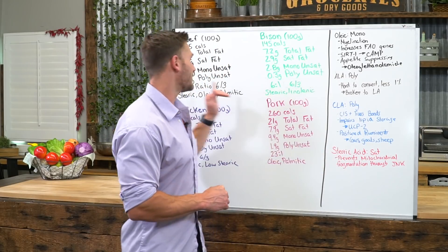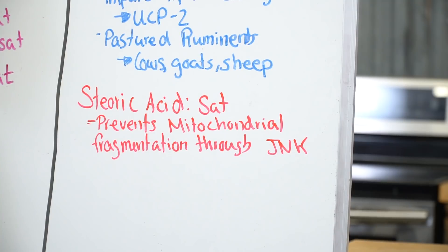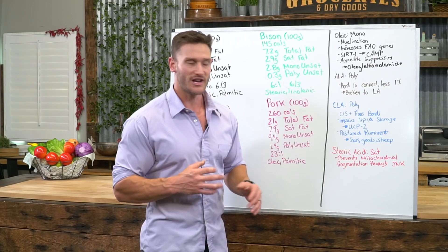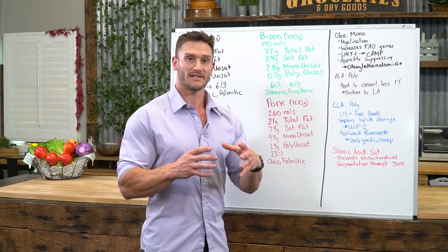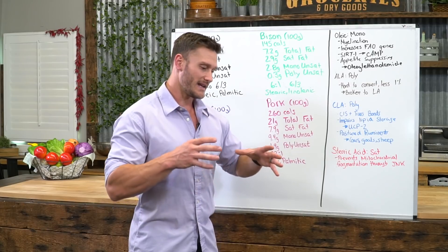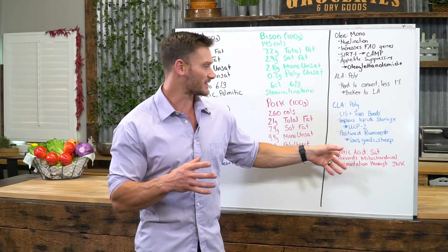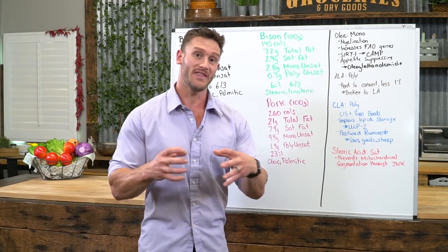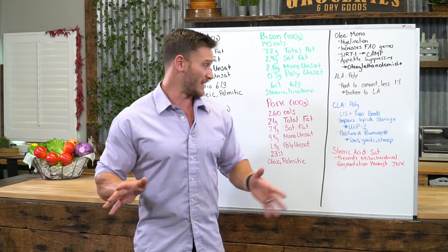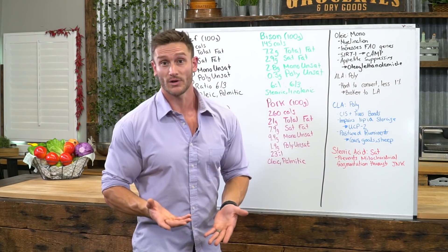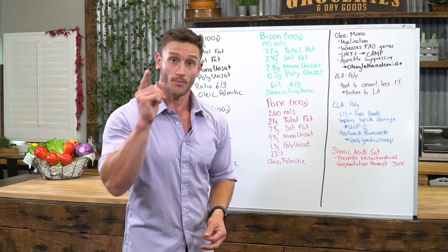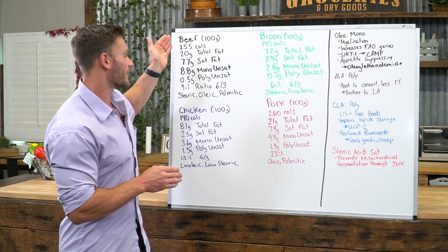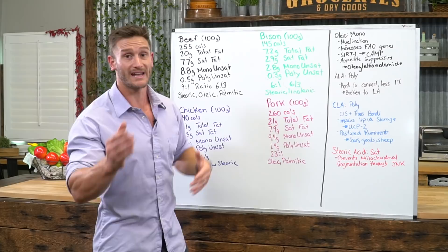Stearic acid is a saturated fat found in beef and bison that prevents mitochondrial fragmentation via activation of the JNK pathway, keeping the mitochondria intact so it can create energy. Without adequate stearic acid, the mitochondria becomes fragmented and cannot produce energy. Since beta-oxidation — fat burning — also occurs in the mitochondria, keeping it healthy is critical.